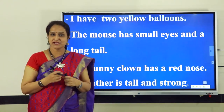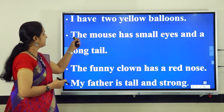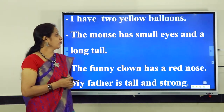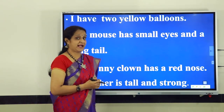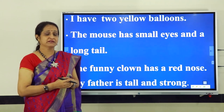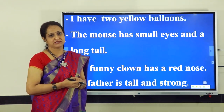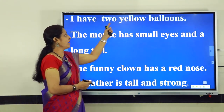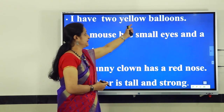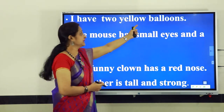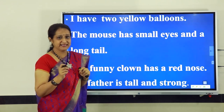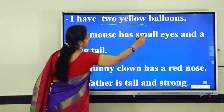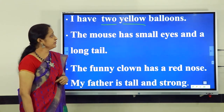Let us read out the next sentence: I have two yellow balloons. In this sentence we have the noun balloons. We also have some describing words that say more about these balloons. Can you find out those describing words? Yes, they are two and yellow. The words two and yellow tell us more about the noun balloons. Let us underline these describing words: two and yellow. Here we have two describing words for the noun balloons.